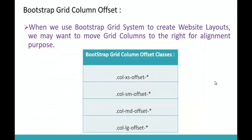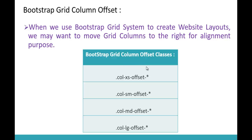Our intention now is to learn what Bootstrap grid column offset is. When we use the Bootstrap grid system to create web layouts, we may want to move grid columns to the right for alignment purposes. The layout is built of 12 columns, and for some alignment purpose we may want to move columns to the right. That can be achieved using Bootstrap grid column offset classes, which are available for extra small, small, medium, and large devices.